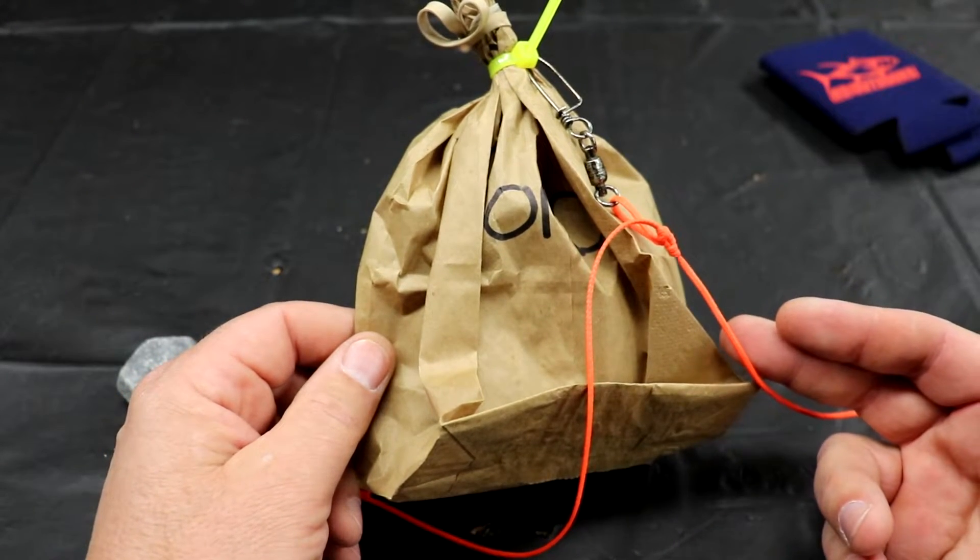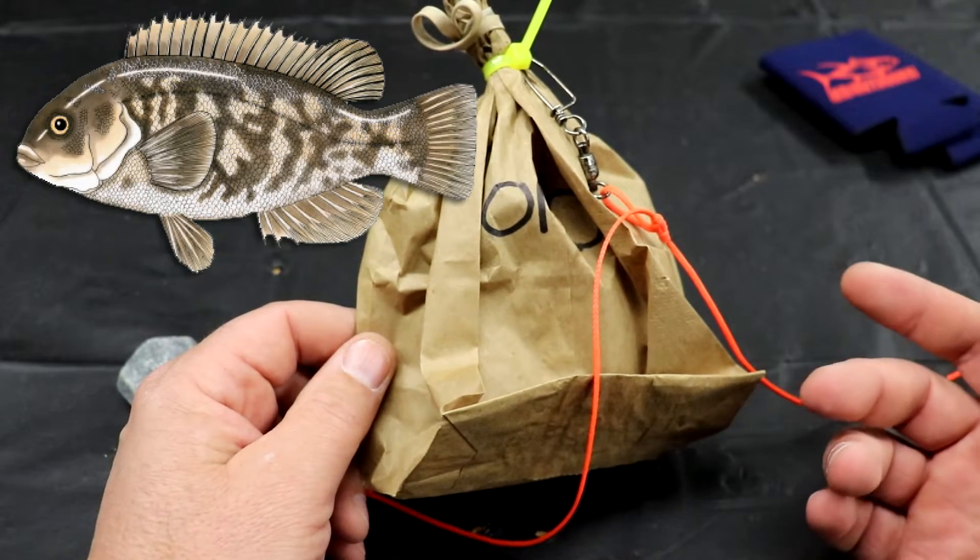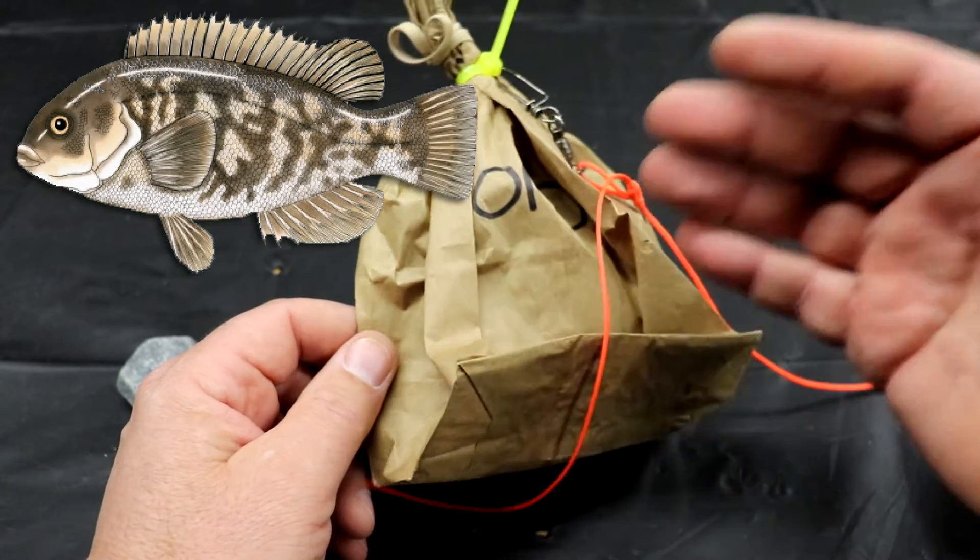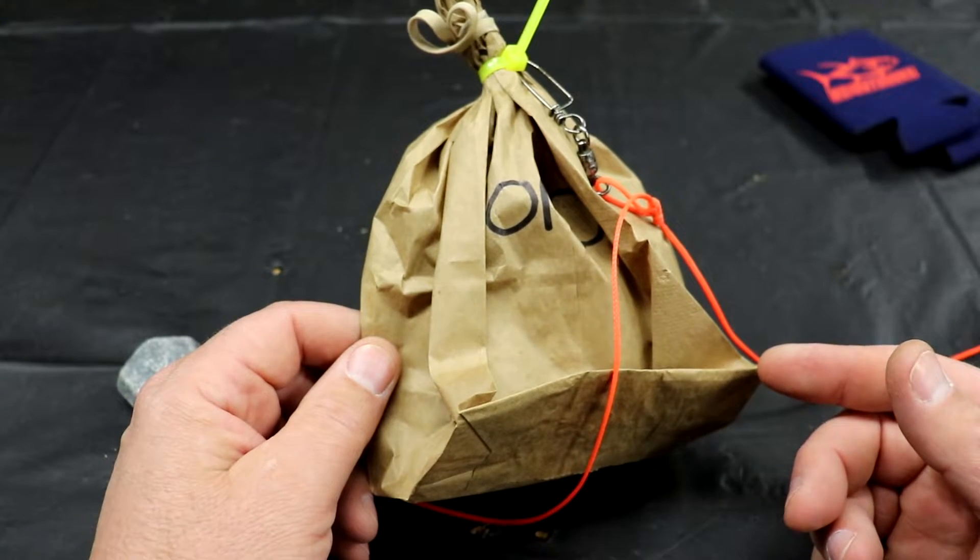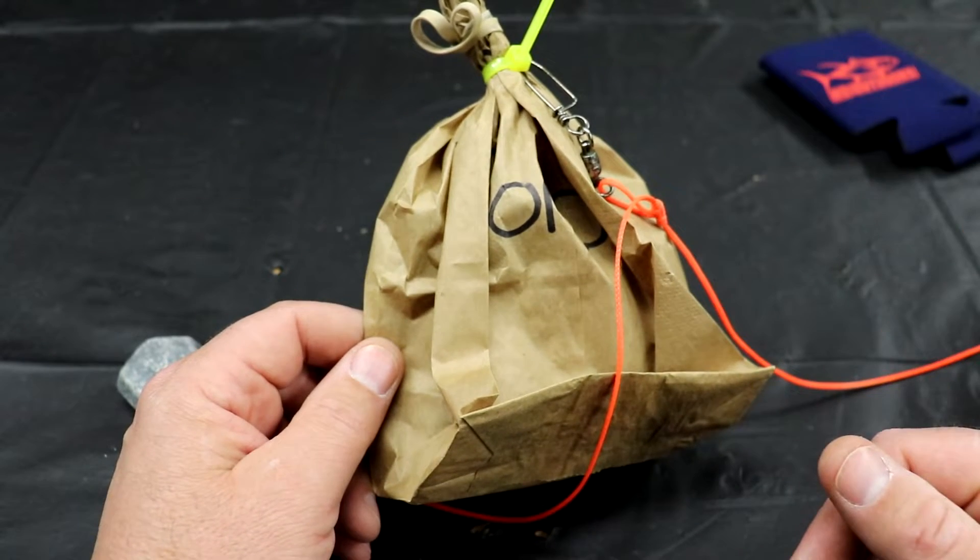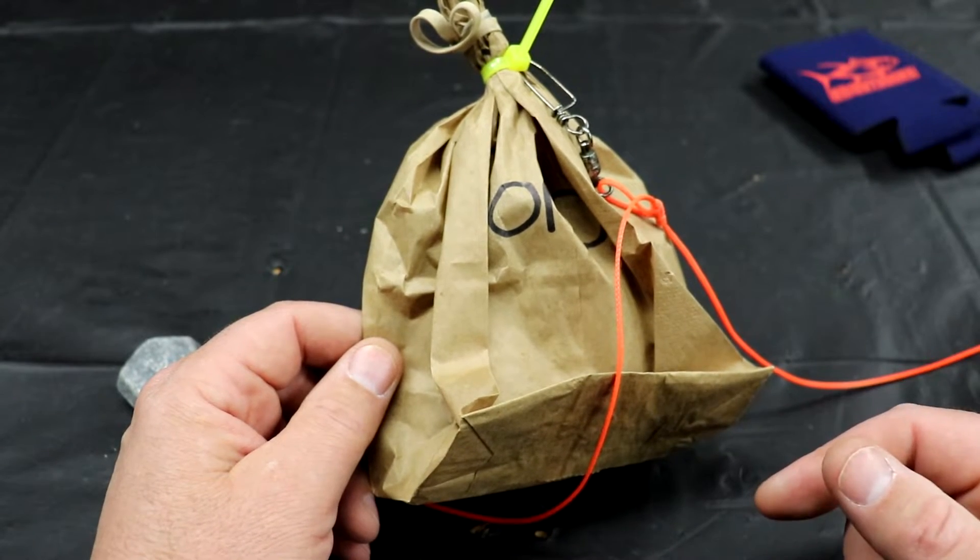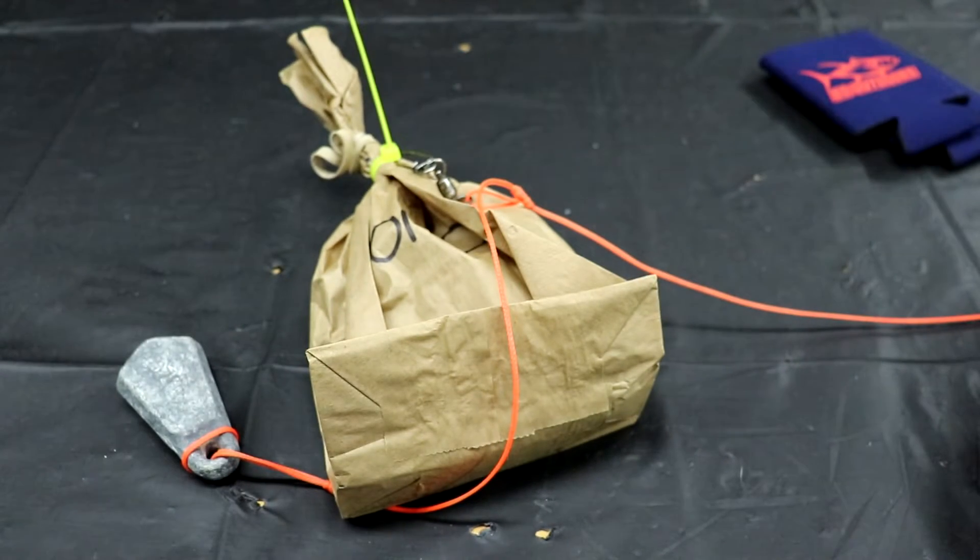This also works really good for blackfish. Take all your crab legs and don't throw them overboard, put them in a bucket. Fill up one of these bags with all that crab particles, the legs, the old chunks that you might not use after it's been bitten up by a blackfish. Take all of that, crush it up, throw it in the bag and send it down on your racks and you'll watch what happens with the blackfish. It's a great little thing to use to get these fish biting.